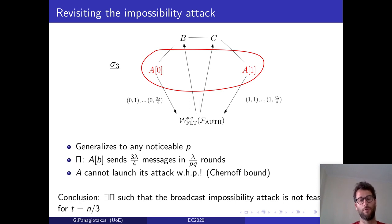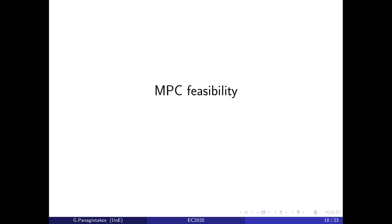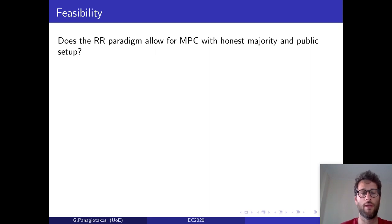Concluding, we show that there is a protocol such that the broadcast impossibility attack is not feasible anymore, even though the adversary can corrupt a third of the parties. What seemed like a contradiction is explained by the fact that the adversary only has limited resources.